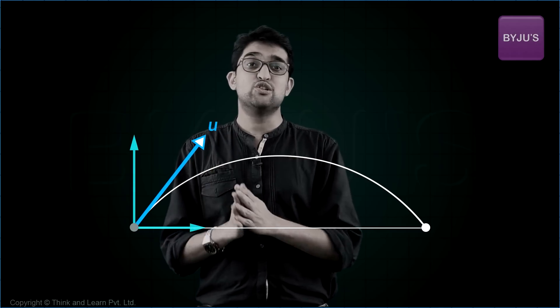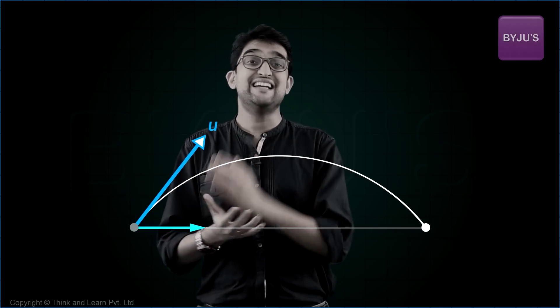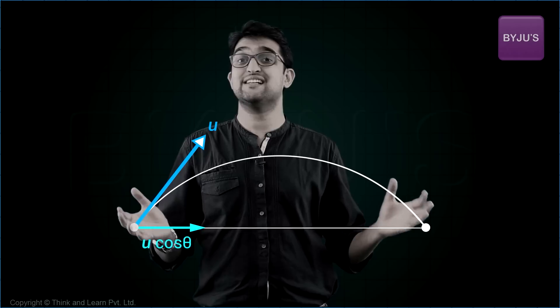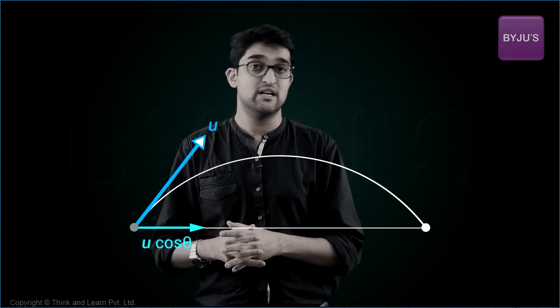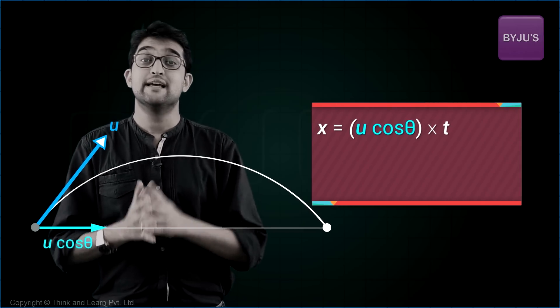So in this scenario, let's look at the horizontal motion. What is happening here? The initial velocity along the horizontal direction is u cos theta. As it is very obvious, there is no acceleration along the horizontal direction, so it is a uniform motion. So what will be the equation? Yes, x is equal to u cos theta into t.